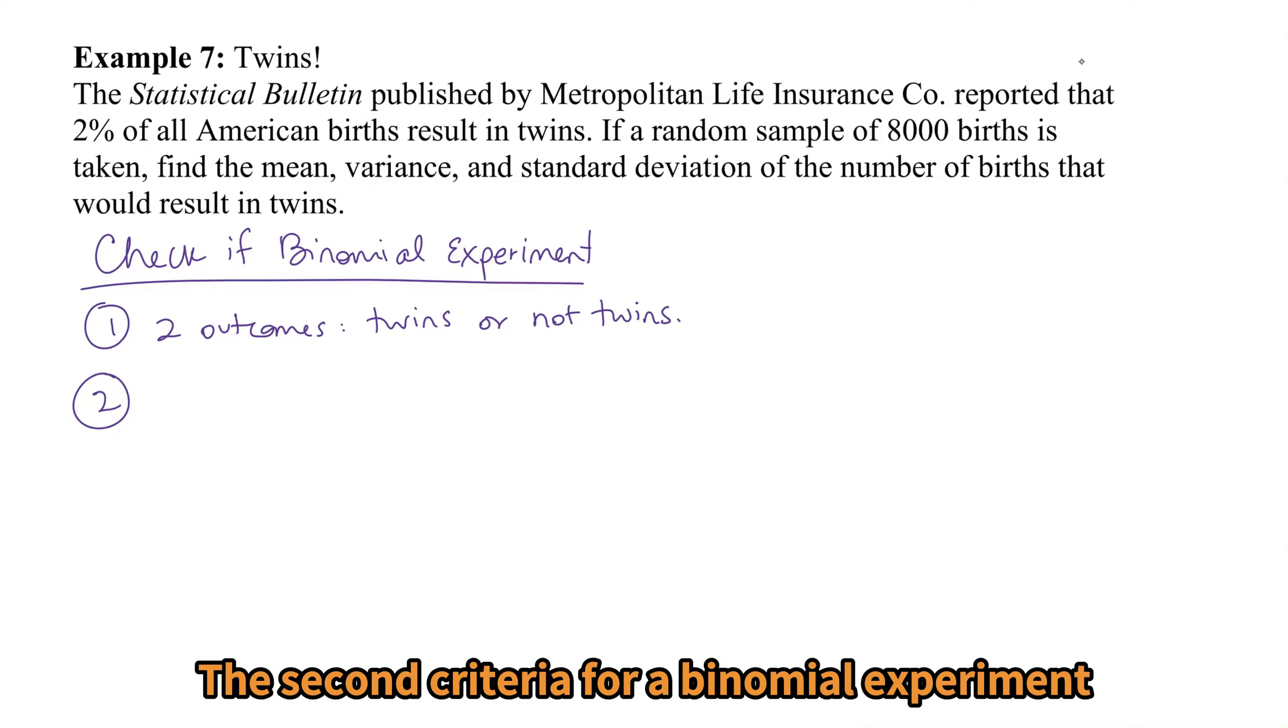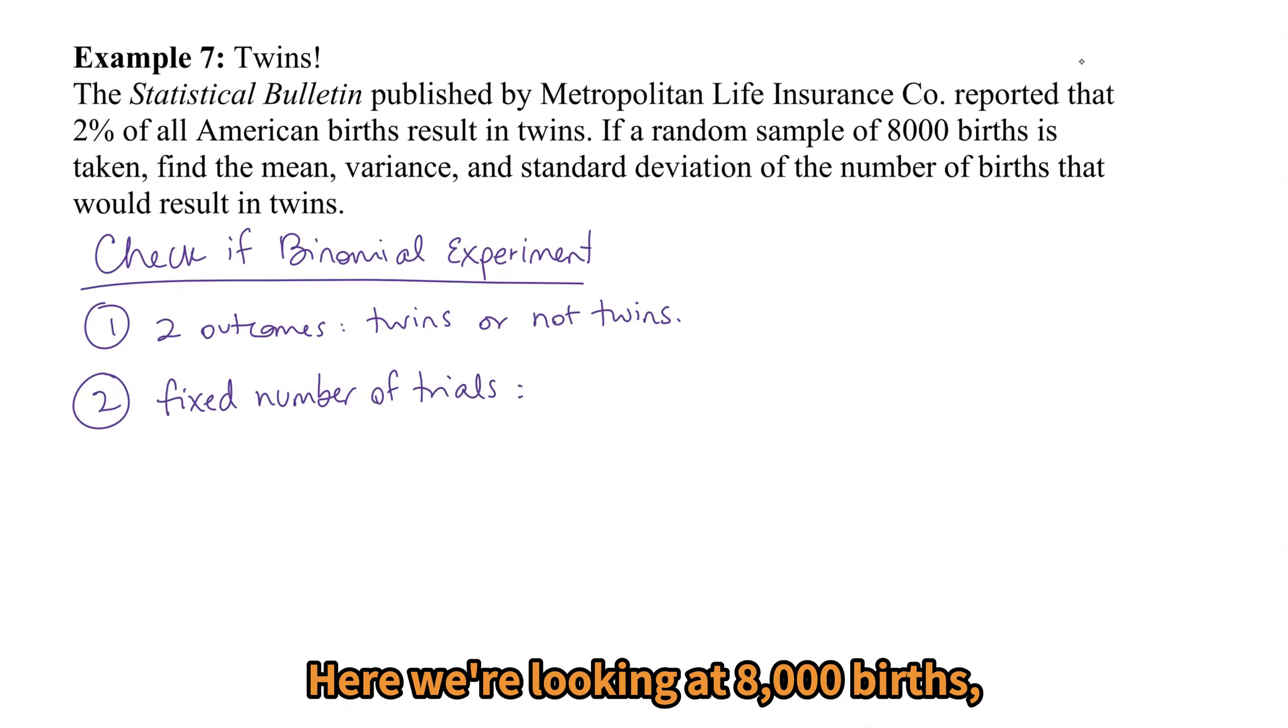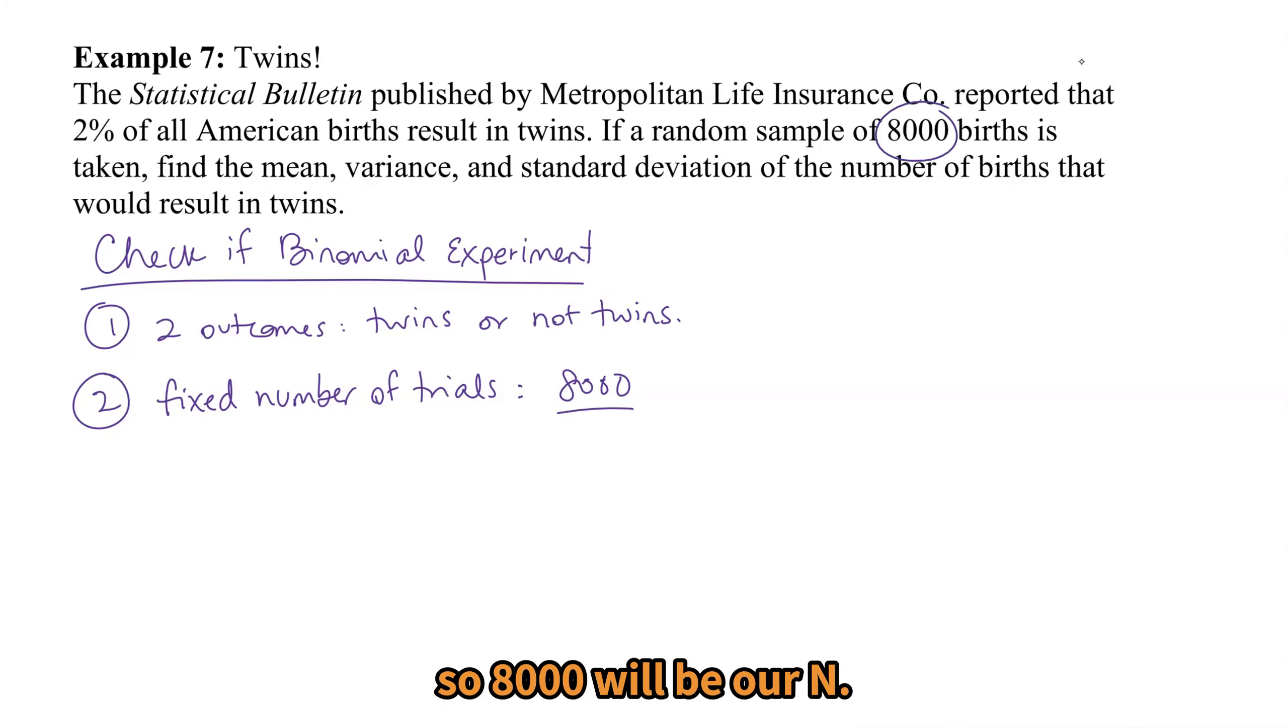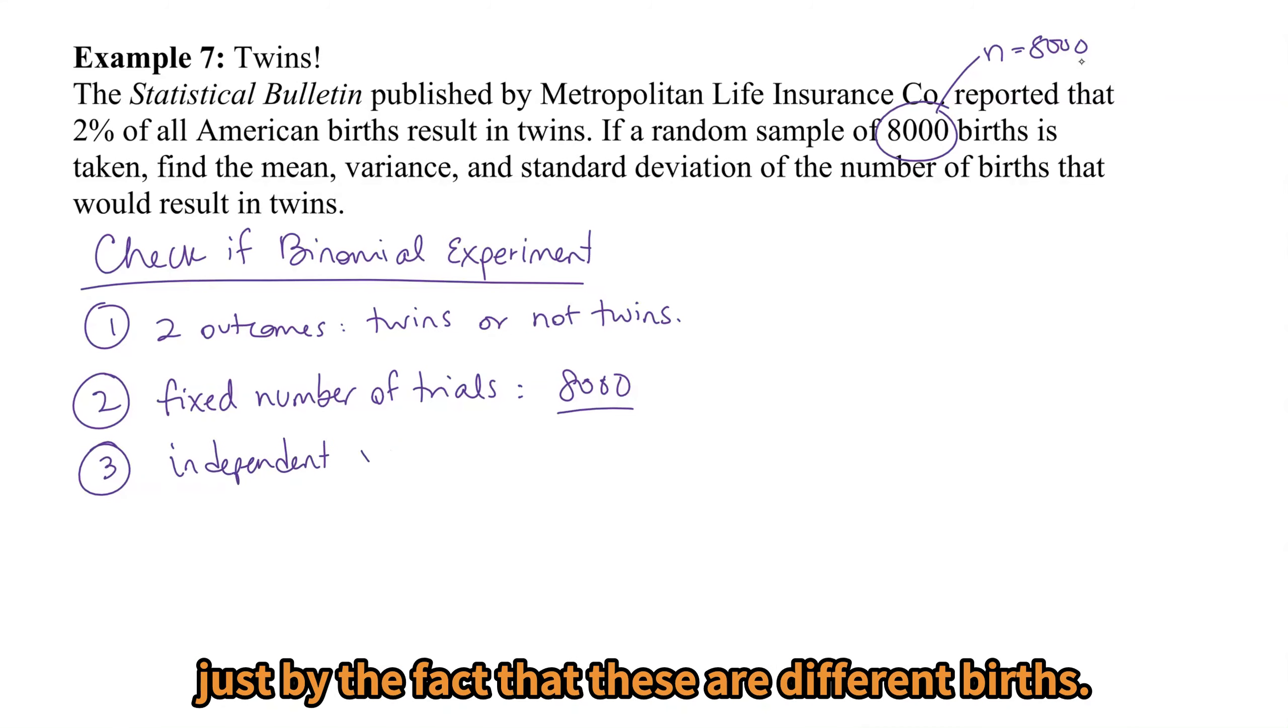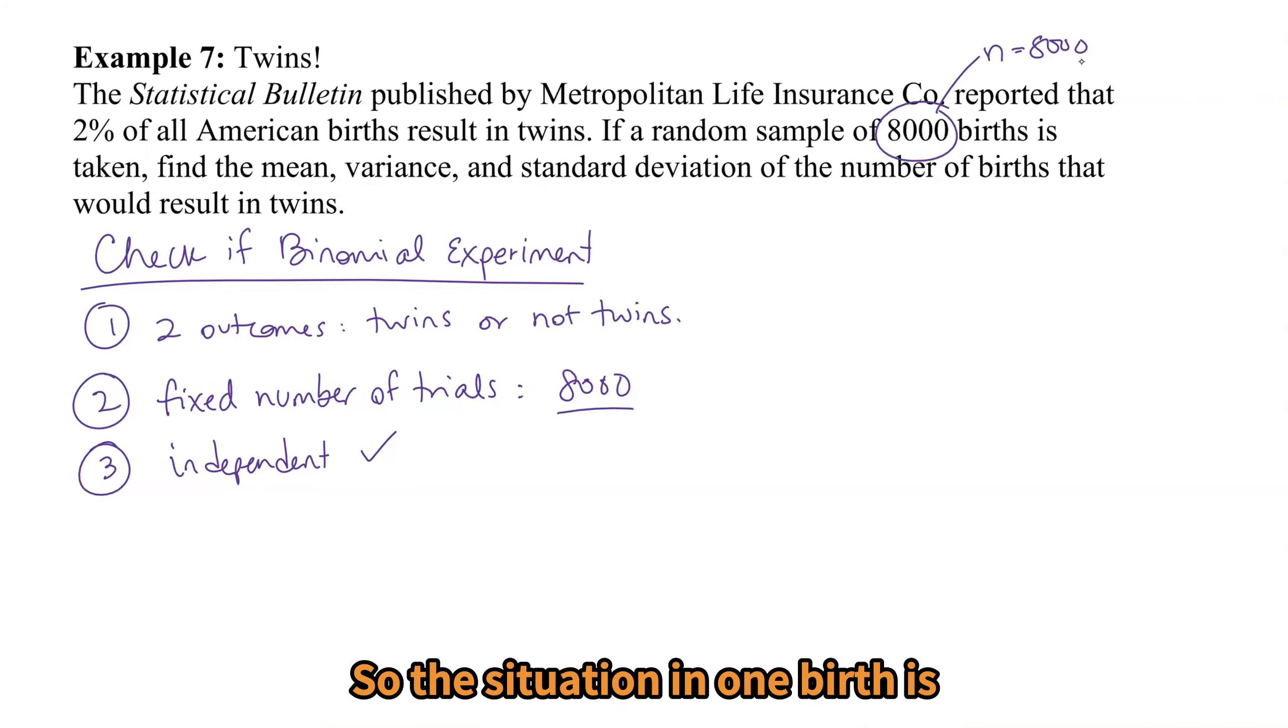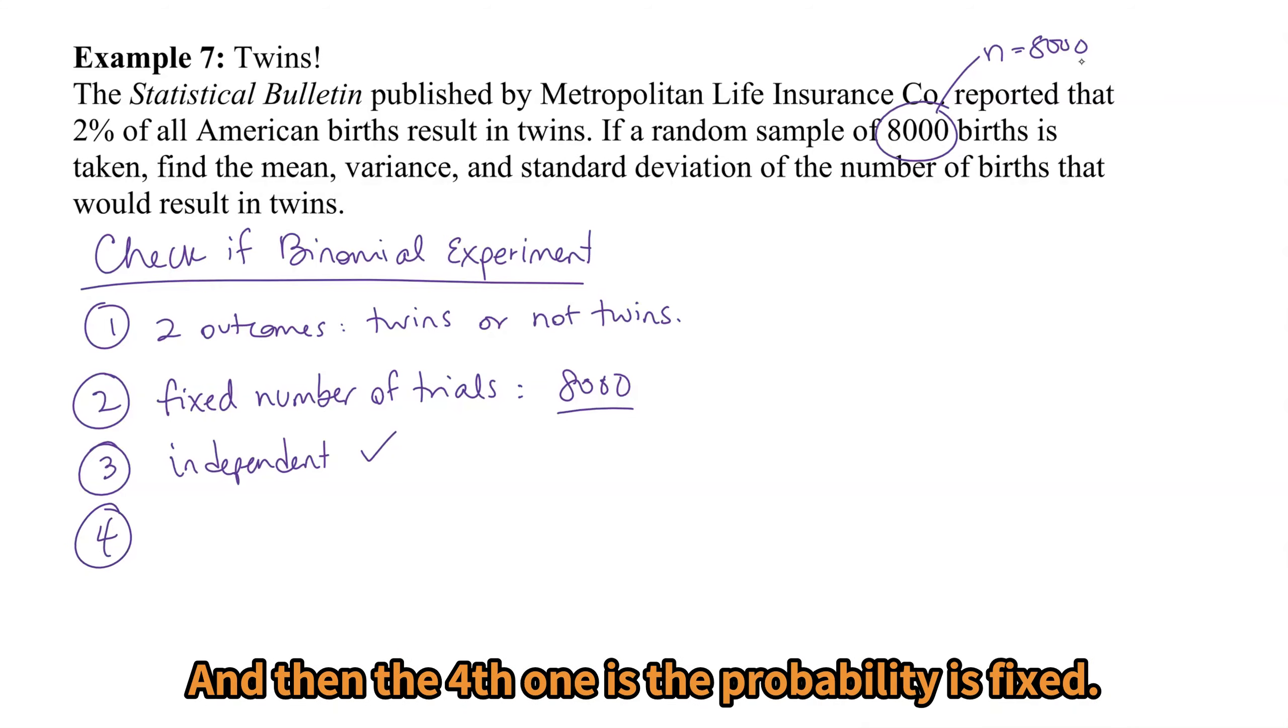The second criteria for a binomial experiment is a fixed number of trials. Here we're looking at 8,000 births, so 8,000 will be our n. The trials are independent, and we have independence just by the fact that these are different births. So the situation in one birth is not going to affect any of the situations in the other births. And then the fourth one is the probability is fixed.